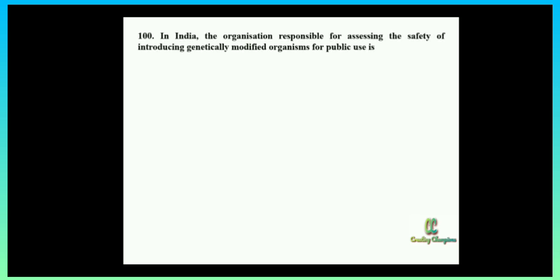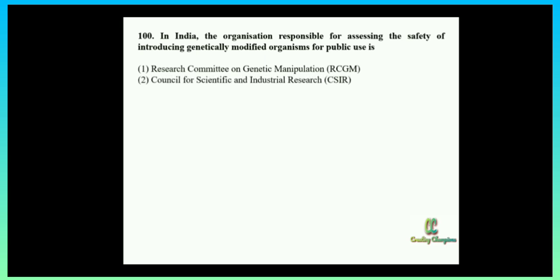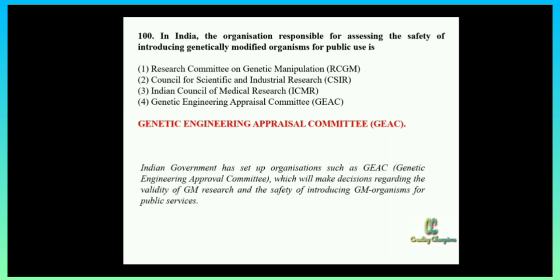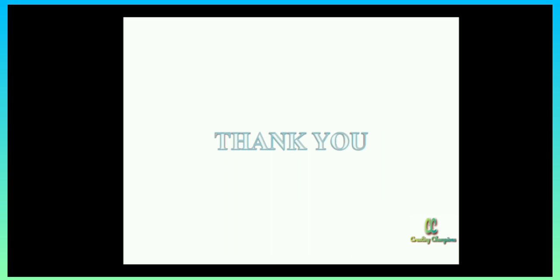Next question: in India, the organization responsible for assessing the safety of introducing genetically modified organisms for public use is — option one: RCGM; option two: CSIR; option three: ICMR; option four: GEAC. The answer is GEAC — Genetic Engineering Appraisal Committee. The textbook states that the Indian government has set up GEAC, which makes decisions regarding the validity of GM research and the safety of introducing GM organisms for public use.